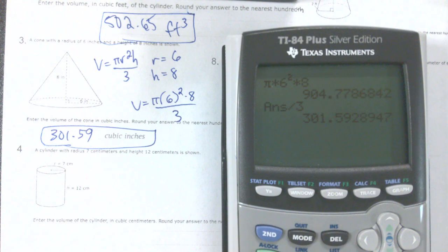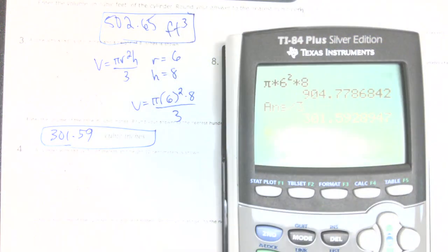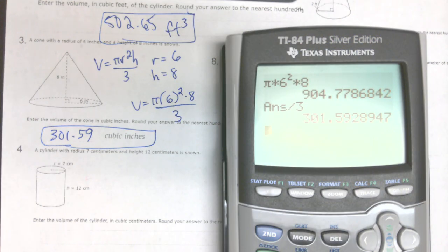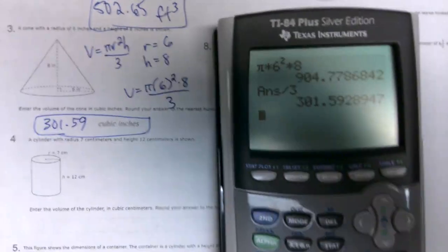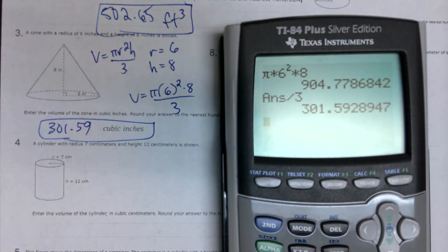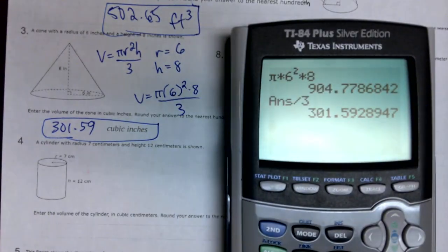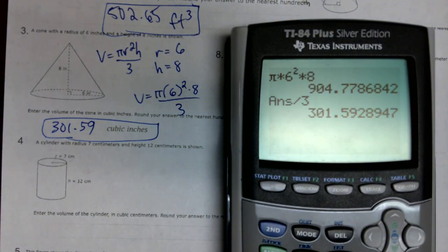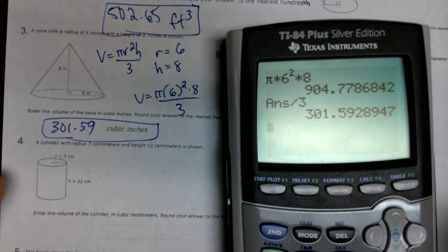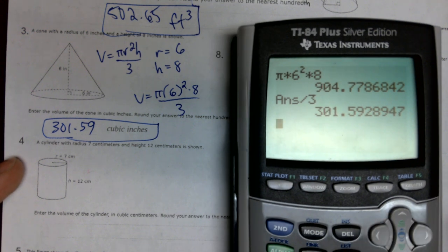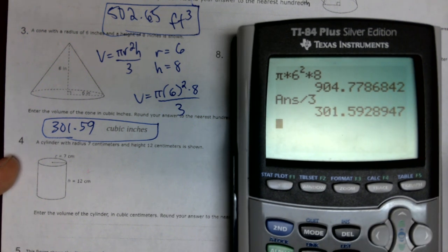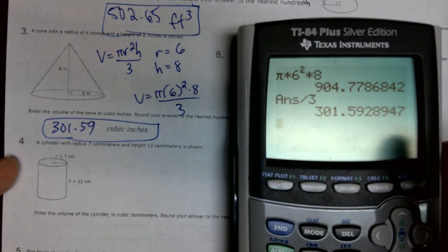Pi times 6 squared times 8, that gives us 904.77. We divide that by 3, and we get 301.59 cubic inches or inches cubed, however you want to say it. There's my calculator so you can see. Questions so far? Plug it in, solving it out, getting a number, cutting it off after two decimals, right?